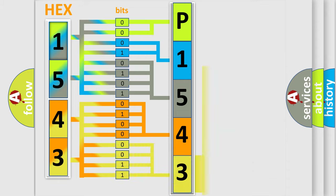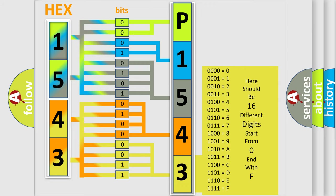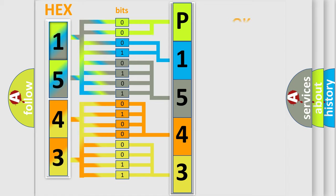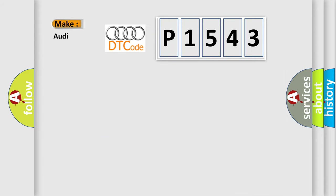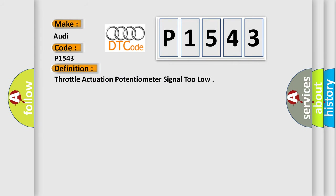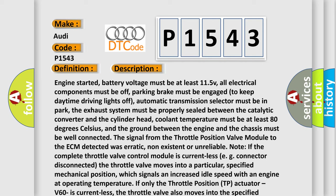A single byte conceals 256 possible combinations. We now know in what way the diagnostic tool translates the received information into a more comprehensible format. The number itself does not make sense to us if we cannot assign information about what it actually expresses. So, what does the diagnostic trouble code P1543 interpret specifically for Audi car manufacturers? The basic definition is: Throttle actuation potentiometer signal too low. And now this is a short description of this DTC code.